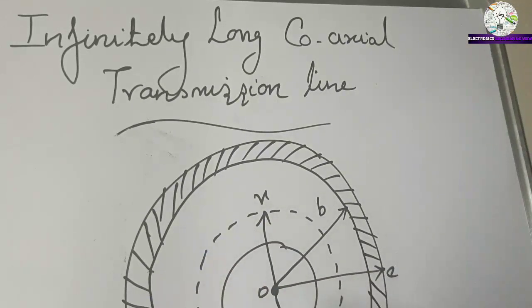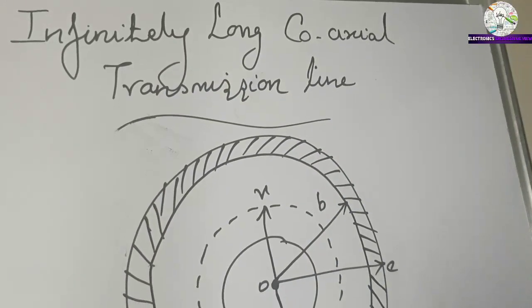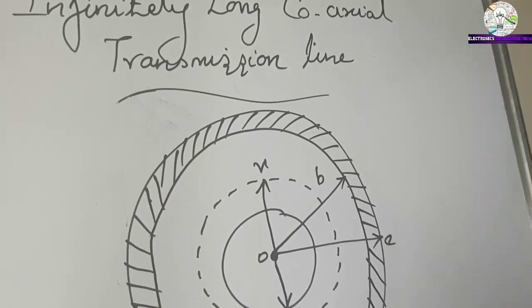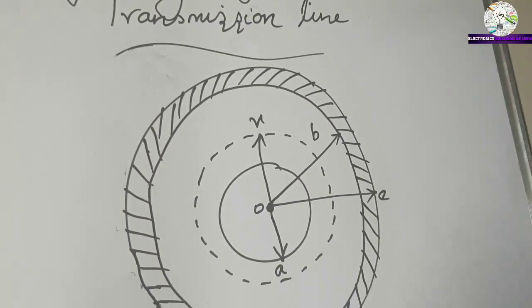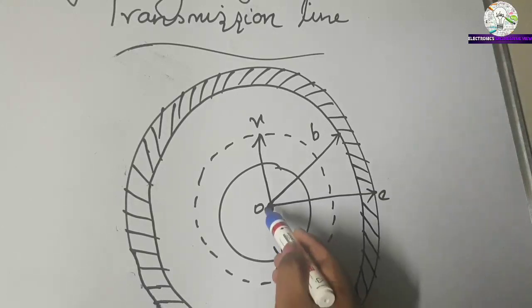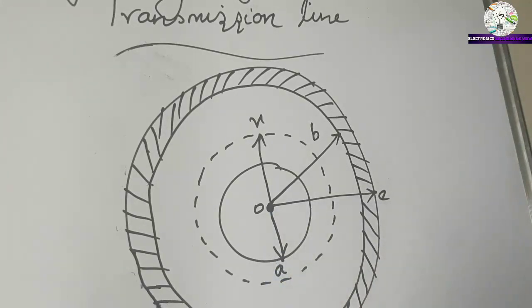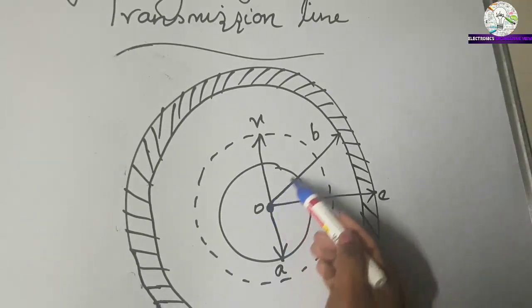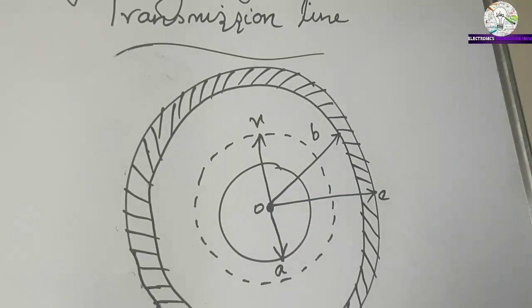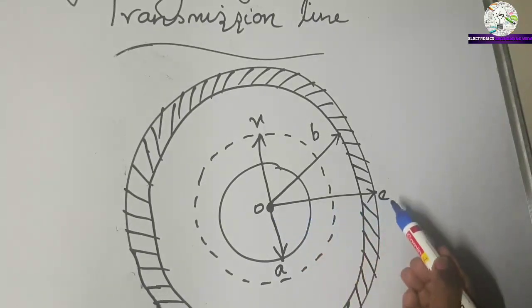This is the figure of the cable with a solid inner conductor of radius A that carries current I, and the outer annular conductor of inner radius B and outer radius C carries current minus I.